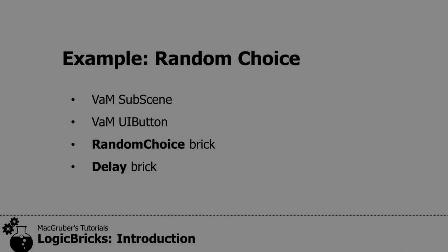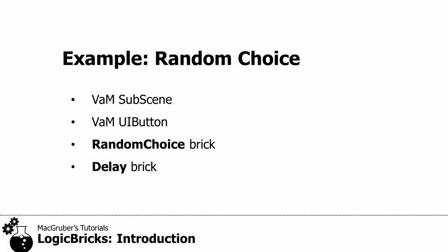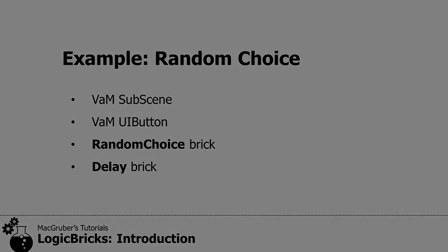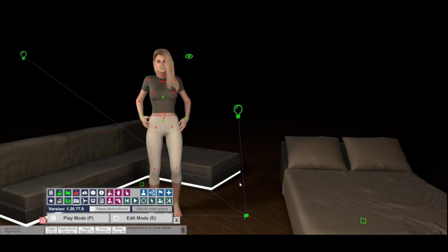For this second example I want to do something with random choice. We want to randomly load a sub-scene when you press a button. We'll use the Random Choice brick, and also put in a Delay brick so there's a slight delay when you press the button. I've prepared a scene with a bed, a sofa, and a character standing, plus a sub-scene atom.